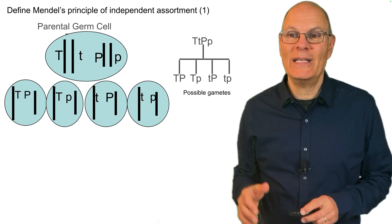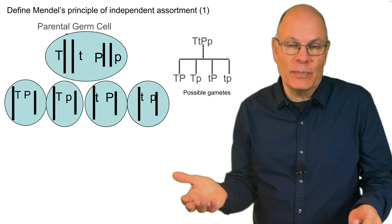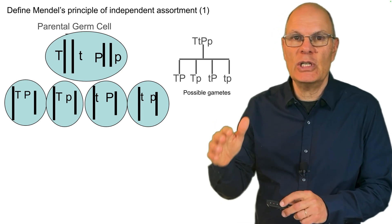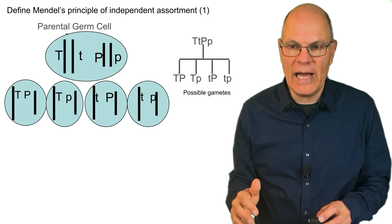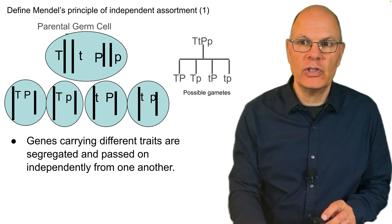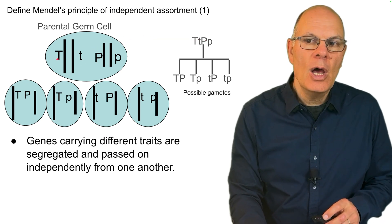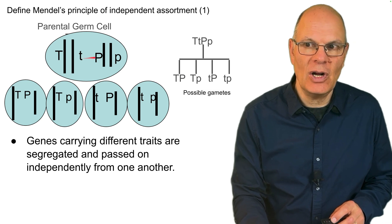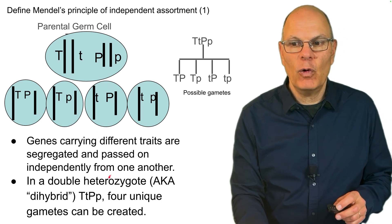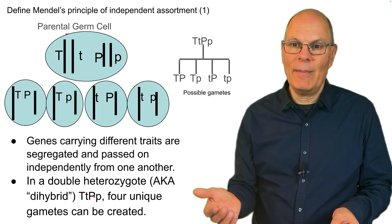Mendel's principle of independent assortment is essentially the same process we discussed in the context of meiosis. Mendel was able to intuit this just by looking at the transmission of traits from one generation to the next. Genes carrying different traits are segregated and passed on independently from one another. So in a dihybrid organism — big T, little t, big P, little p — the way the T gene pair is passed on is independent from the way the P gene pair is passed on. Therefore, four unique gametes can be created from a double heterozygote.